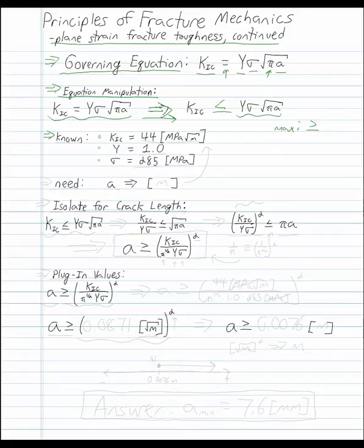Next up, we can write down what's known. So the known value for the plane strain fracture toughness is 44, and units of that are megapascal square root of meters. We're also given Y of 1.0, and since as we discussed, that's a dimensionless parameter, there are no units. And finally, the applied stress, which is going to be 285, and units of that are megapascals.